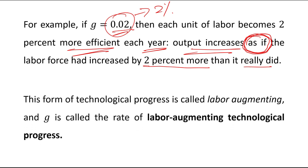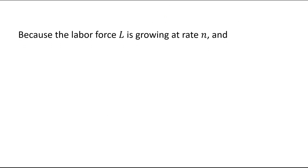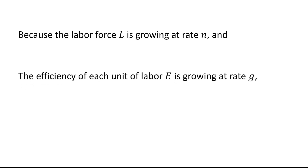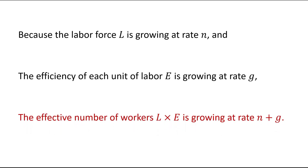This form of technological progress is called labor augmenting, and G is called the rate of labor augmenting technological progress. Because the labor force L is growing at rate N and the efficiency of each unit of labor E is growing at rate G, the effective number of workers L times E is growing at a rate of N plus G.